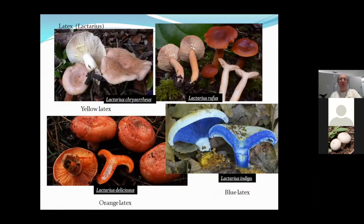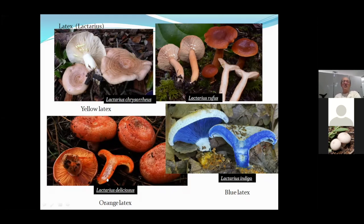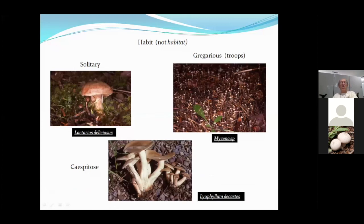Some mushrooms are called milky cap mushrooms because when you break the flesh they exude a sap we call latex. Lactarius chrysorrheus, which means 'golden tears,' has yellow latex; Lactarius rufus has white latex; Lactarius indigo has blue latex; and Lactarius deliciosus has orange latex. Finally, mushrooms can grow individually, in gregarious troops like little Mycenas, or in caespitose clusters where many mushrooms grow from a single central base.